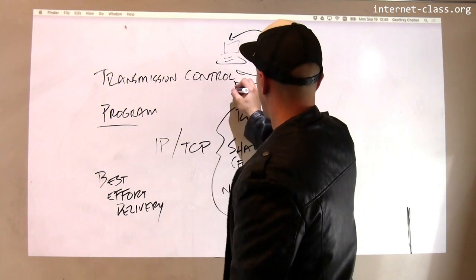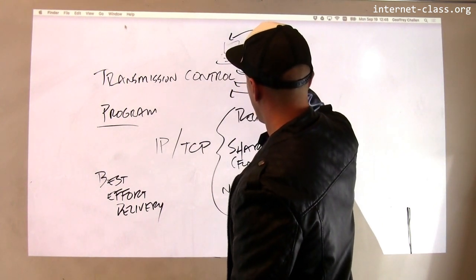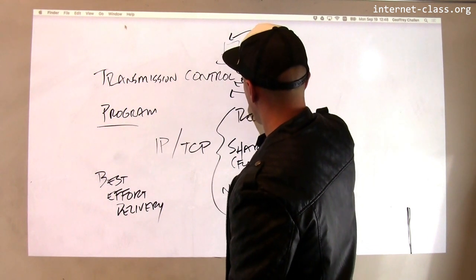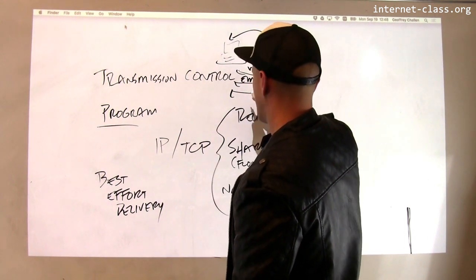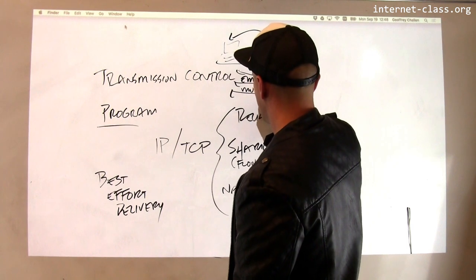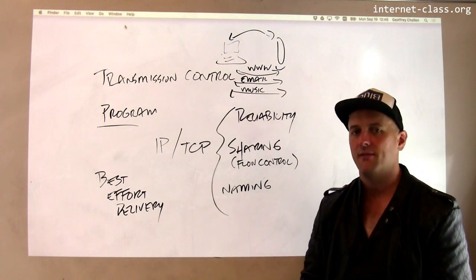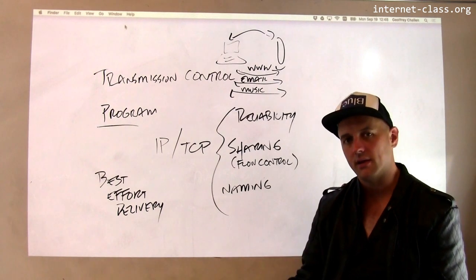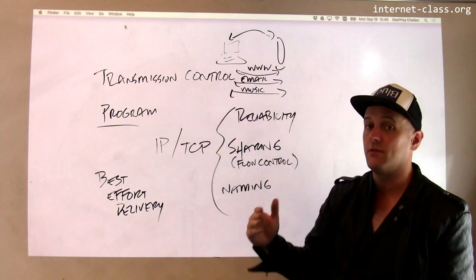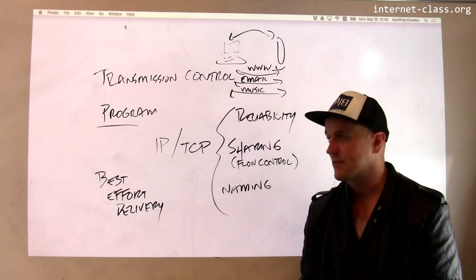So this one might be used to download a web page, this one might be used for email, this one might be used for streaming music. This is really important because without the ability to do this, it'd be very difficult to realize the modern internet. You'd really only have one stream of data between two computers, and that just doesn't make any sense.